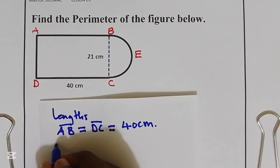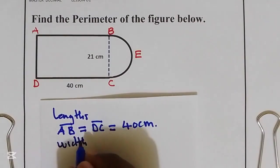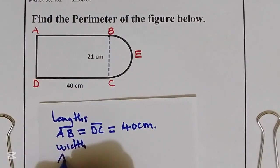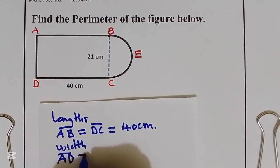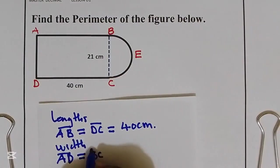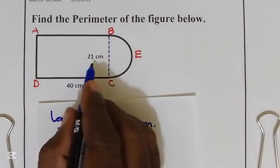We have width which is the length AD, which is equal to BC. This is equal to 21 centimeters.